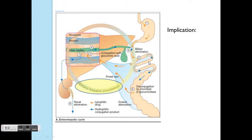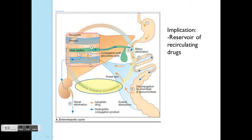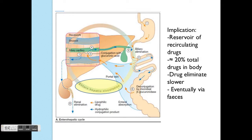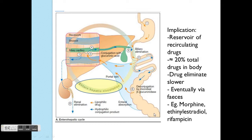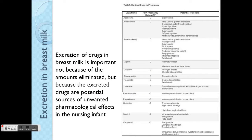From the stomach, after administration and absorption, the drug goes into the liver, undergoes phase 1 and phase 2 metabolism and conjugation, is secreted back with the bile system, goes into the intestine, is deconjugated by bacteria and enzymes, and then goes round again. You have a reservoir of recirculating drugs, which is about 20% of the total drugs in the body. Eventually all of these drugs will be excreted. Famous examples include morphine, ethinylestradiol — which is the hormone pill — and rifampicin.